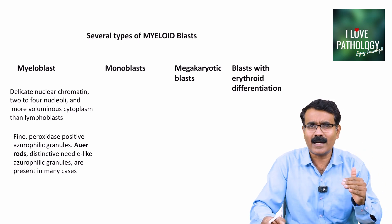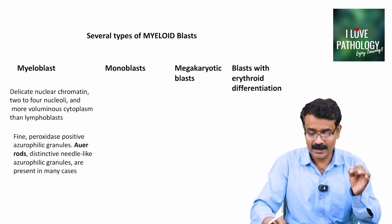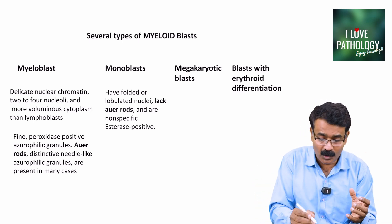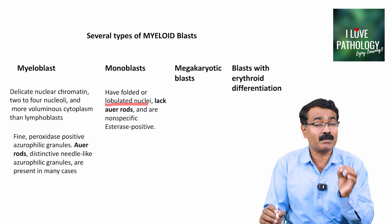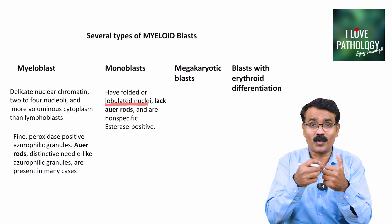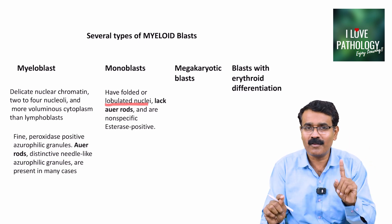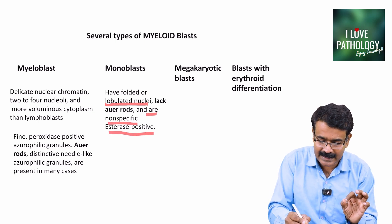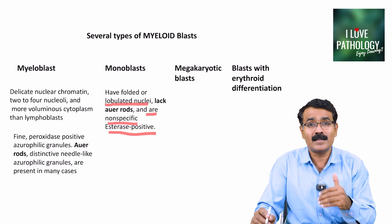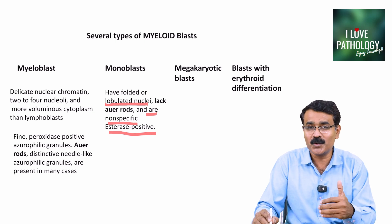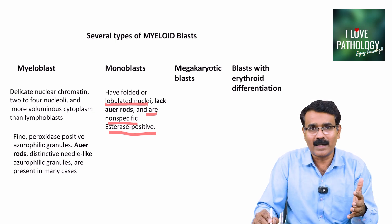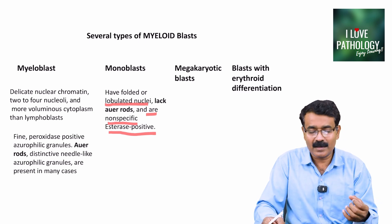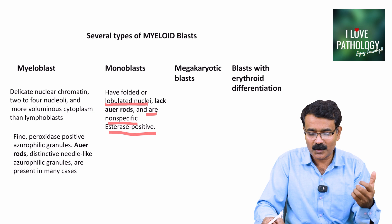The second important myeloid blast is the monoblast. These have large folded or lobulated nuclei. They do not have Auer rods, and they are non-specific esterase positive — one of the cytochemical stains used to identify monoblasts. The third type is the megakaryocytic blast, and the fourth is the blast with erythroid differentiation.